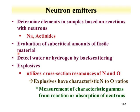Neutron emitters are also used to detect water or hydrogen by neutron backscattering. Neutrons are very sensitive to low-Z material, particularly protons and hydrogen. They can detect the presence of water—for instance, in drilling activities to determine if water or oil is present. Finally, neutron emitters can be useful for the detection of explosives.